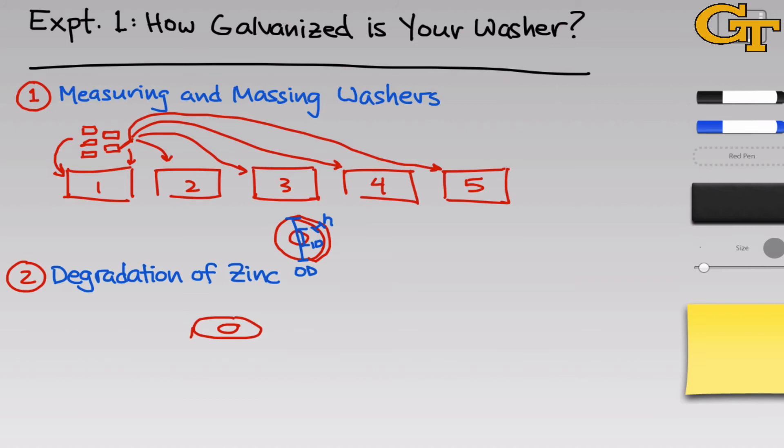These washers are galvanized, which means that they've been coated in a thin layer of zinc around the outside. So there's a thin layer of zinc on top of the entire washer surface that protects it from weathering and other effects of the environment. To determine the mass and thickness of this layer, we're going to subject the washer to treatment with hydrochloric acid.